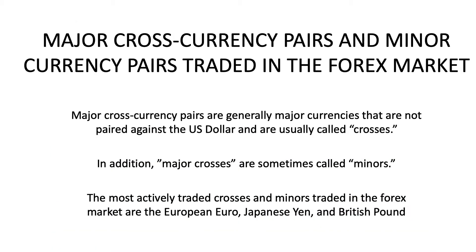Aside from major currency pairs, there are also major cross currency pairs and minor currency pairs traded in the Forex market. Major cross currency pairs are generally major currencies that are not paired against the US dollar, and are usually called crosses. Major crosses are sometimes also called minors.